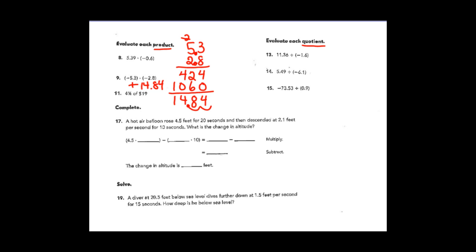Another little review of percent: four percent of nineteen dollars. Changing four percent to the decimal four hundredths and then multiplying by nineteen. Nineteen times four: four times nine is thirty-six, carry the three; four times one is four, plus three makes seven. Nineteen times four hundredths — I have two decimal places in my product, so my answer has to have two decimal places. The answer is seventy-six cents, because we're talking about money in number eleven.